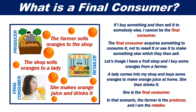Let's imagine I have a fruit shop and I buy some oranges from a farmer. A lady comes into my shop and buys some oranges to make orange juice at home. She then drinks it. She is the final consumer. In that scenario, the farmer is the producer and I am the retailer.